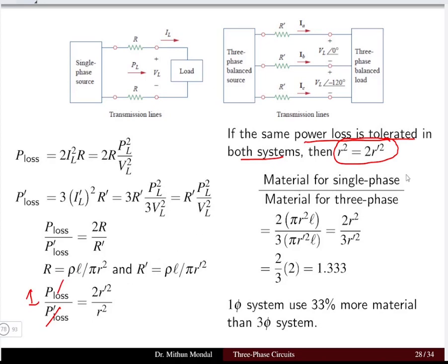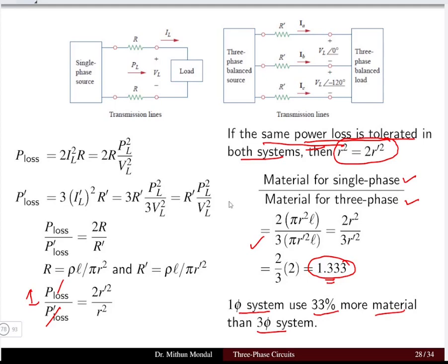Comparing the material used for a three-phase system versus a single-phase system for the same power loss, the ratio of single-phase material to three-phase material works out to approximately 1.33. This means the single-phase system uses 33% more conductor material than the three-phase system, making the three-phase system more economical.